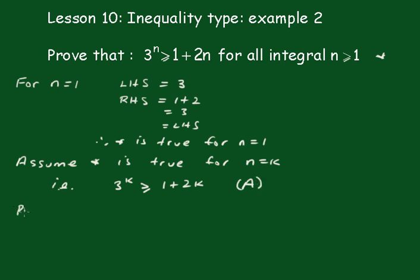We have to prove the statement is true for n equals k plus 1. That is, 3 to the k plus 1 is greater than or equal to 1 plus 2 times k plus 1. And that's our proof P statement.